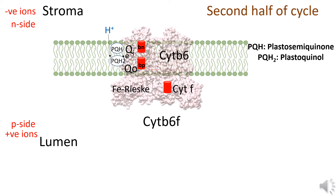The electron from the Bn heme is then transferred to the plastosemiquinone at the Qi site. The presence of that electron plus another proton from the stromal side transforms the plastosemiquinone to plastoquinol (PQH2), which can then return to the PQ pool. This ends the second half of the Q cycle.